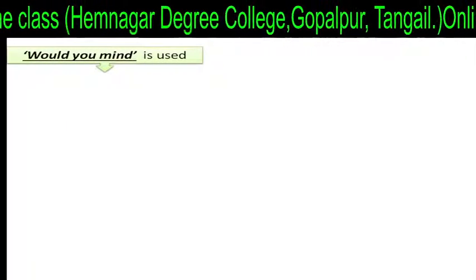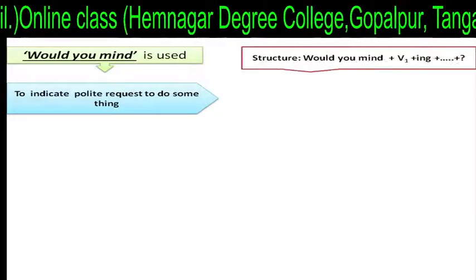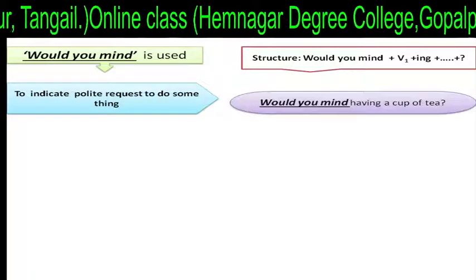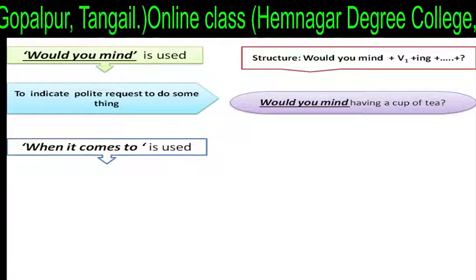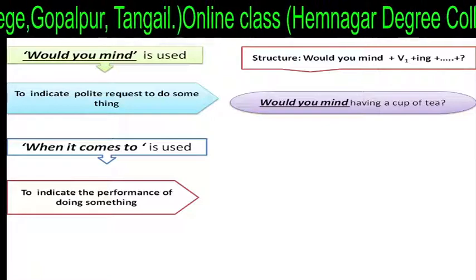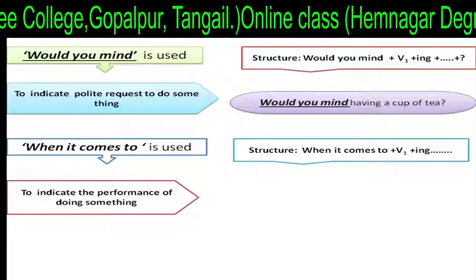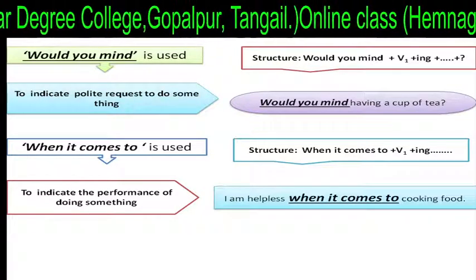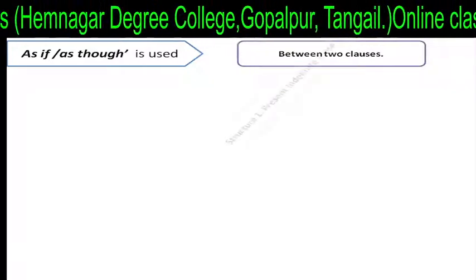Would you mind is used to indicate a polite request to do something. Structure: 'Would you mind' plus beyond plus -ing plus extension plus question mark. For example: 'Would you mind having a cup of tea?' When it comes to is used to indicate the performance of doing something. Structure: 'when it comes to' plus V plus -ing. For example: 'I am helpless when it comes to cooking food.'